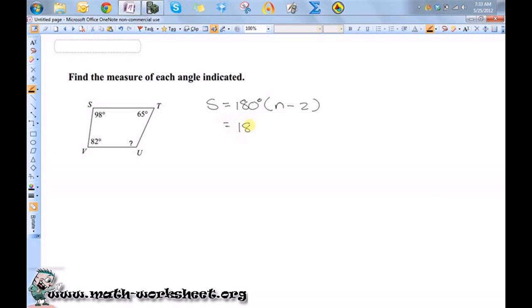So it's equal to 180 where n—I'm sorry, s represents the sum—4 minus 2, so 180 times 2, which means s is equal to 360 degrees.